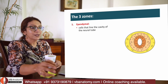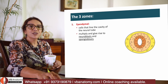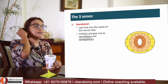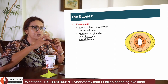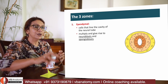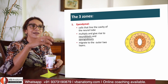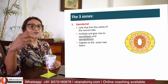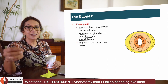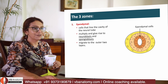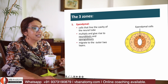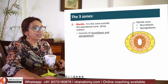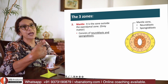The ependymal layer gives rise to neuroblasts and spongioblasts, which will migrate into the mantle zone. Whatever is left stays there forming a layer of simple columnar epithelium with microvilli, forming the ependymal lining of the central canal and producing CSF. The mantle zone meanwhile is receiving neuroblasts and spongioblasts.